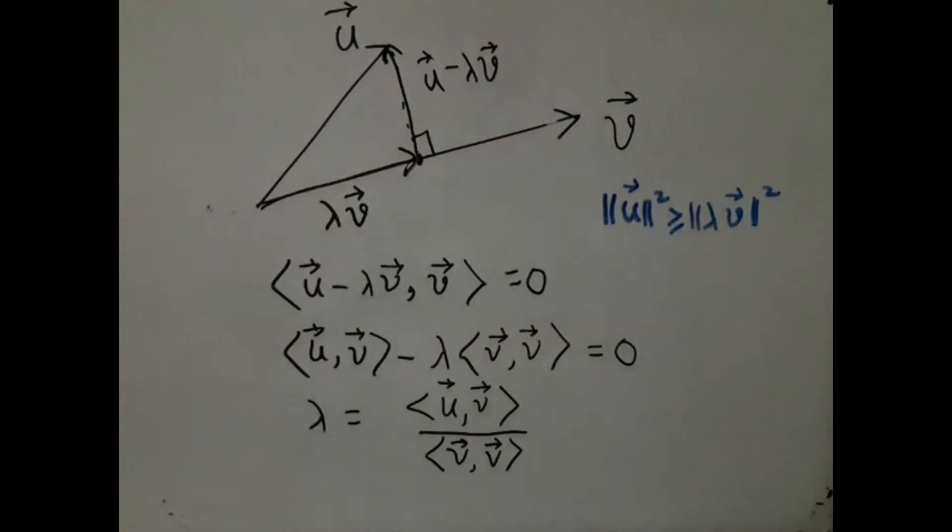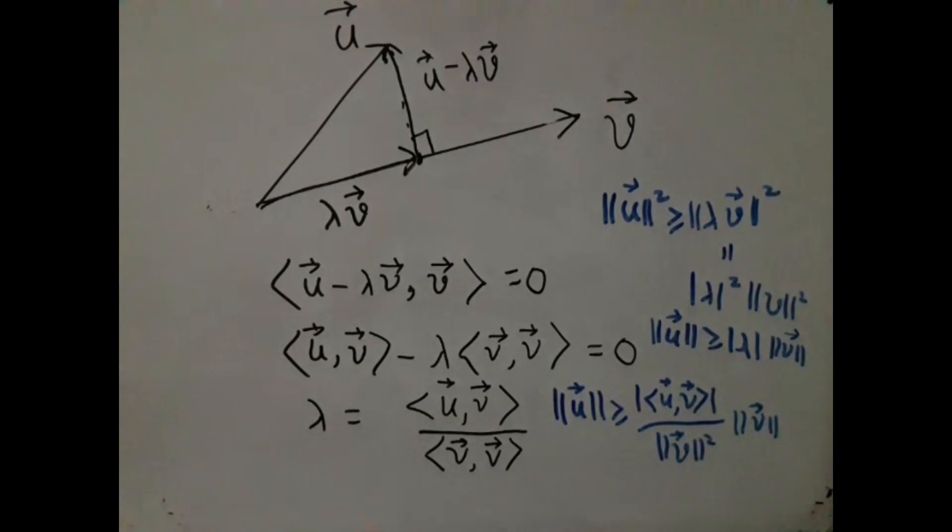Now I know the property of norm - this λ will come out. Taking non-negative square root of both sides, and now I use the fact that λ is actually given by this quantity. So I have one cancellation here, take this on this side, and immediately you get the Cauchy-Schwarz inequality.